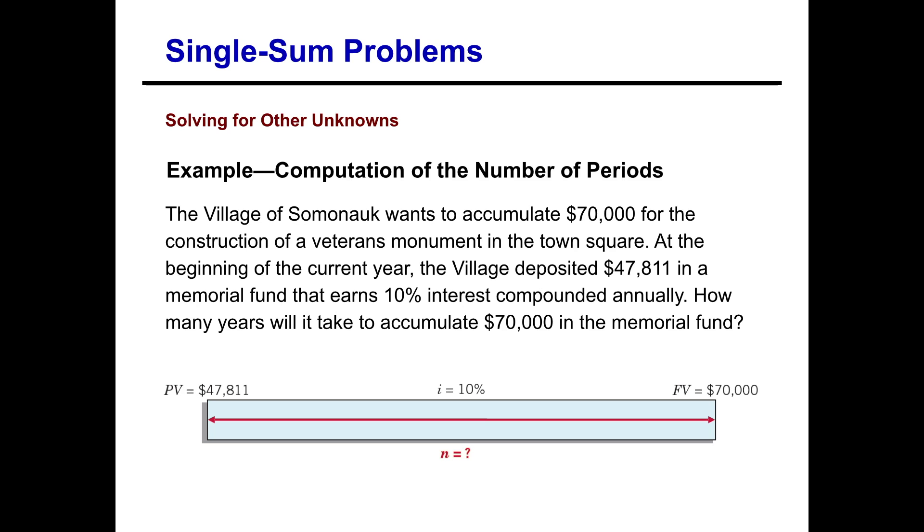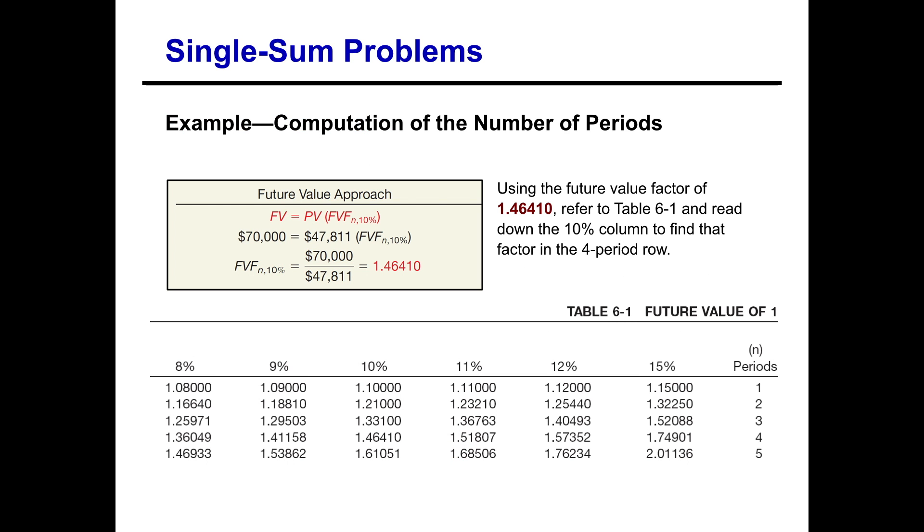So there's a couple of methods we can actually use to find this amount. The first method is called the future value approach. So with this approach in the box there, you see the information in red, we're going to set the future value equal to the present value times the future value factor at a certain number of periods and 10% interest. And again, we're looking for that little n. We're looking for the number of periods. So the unknown amount is that future value factor.